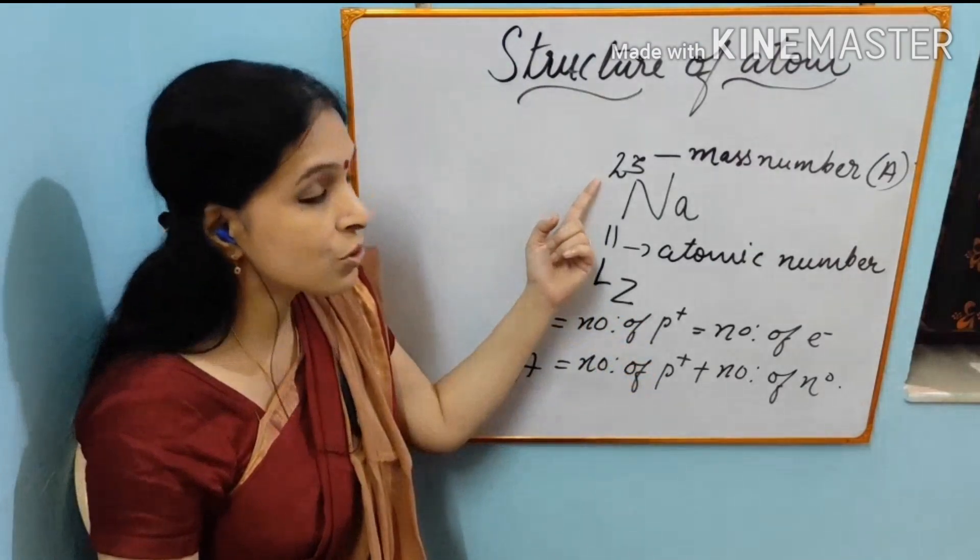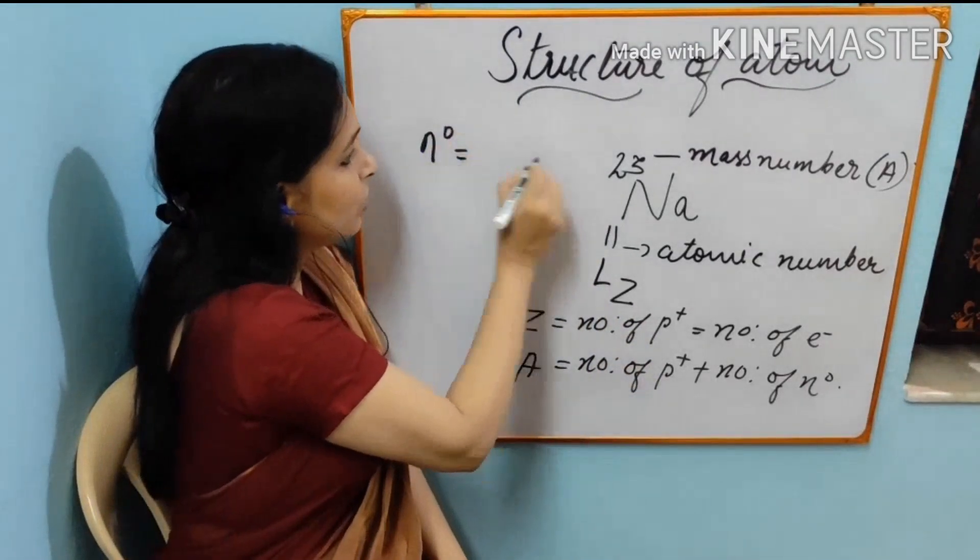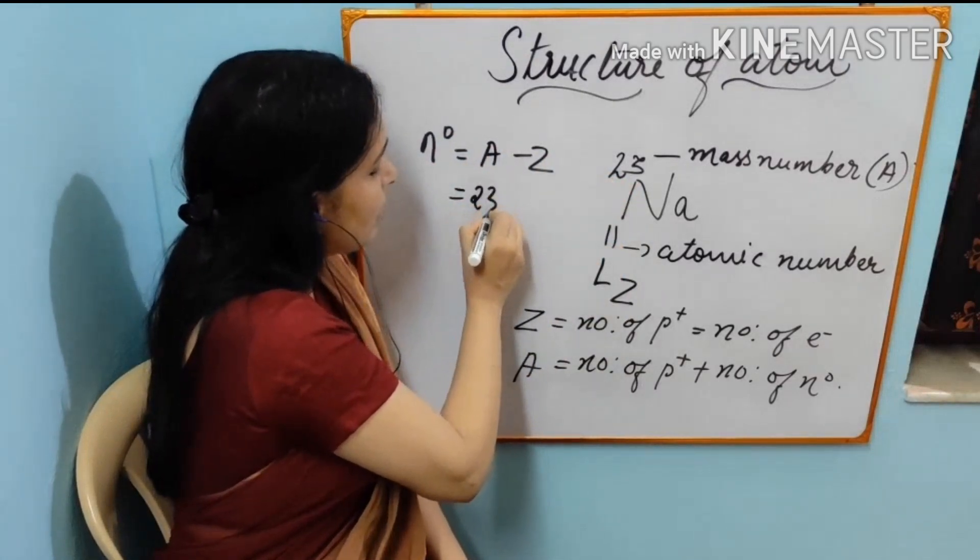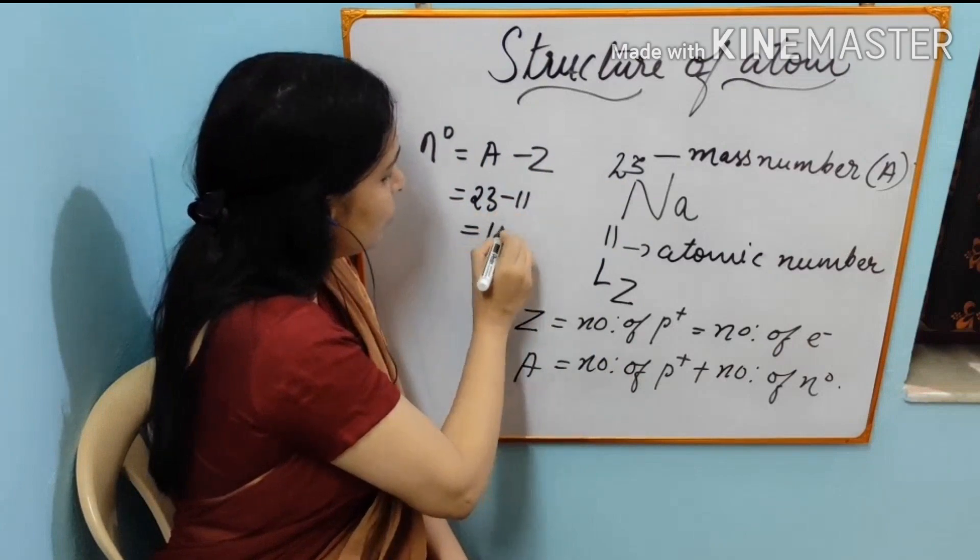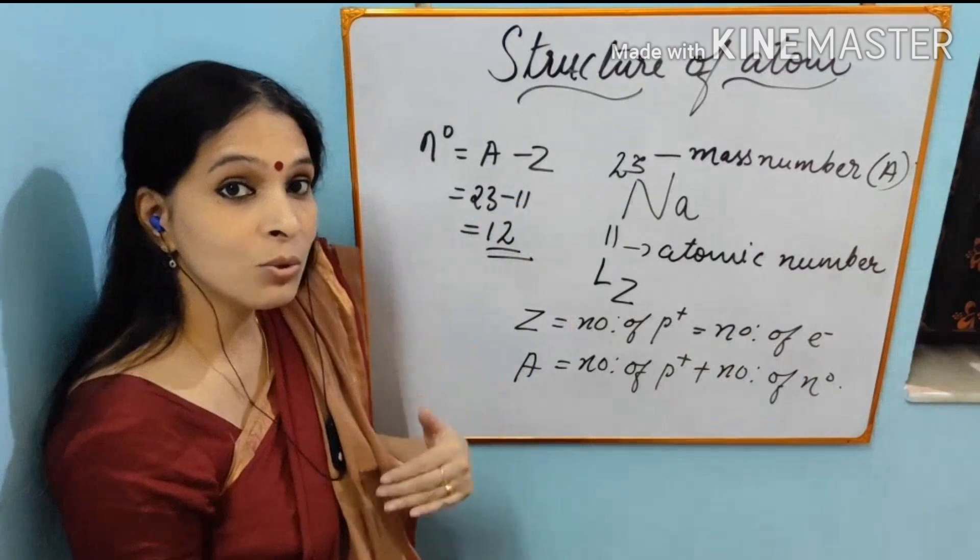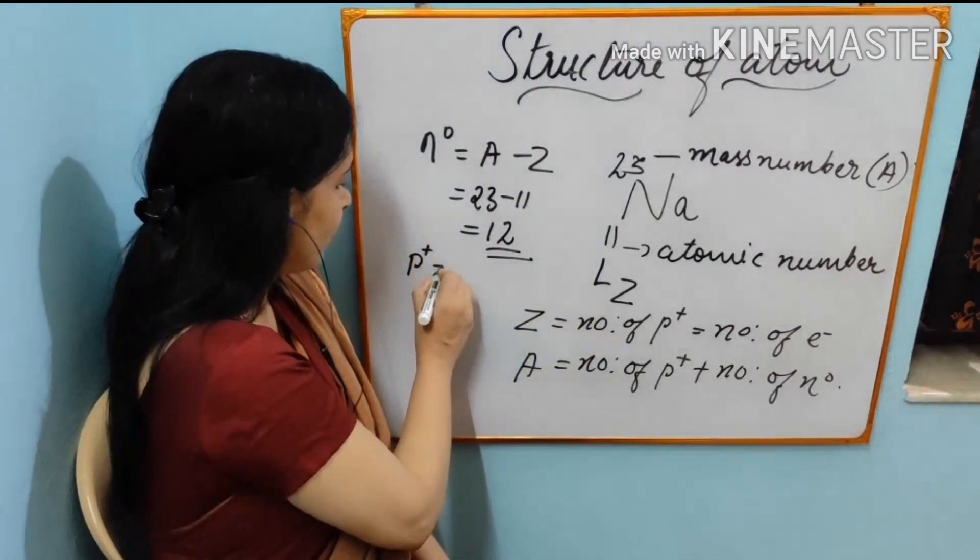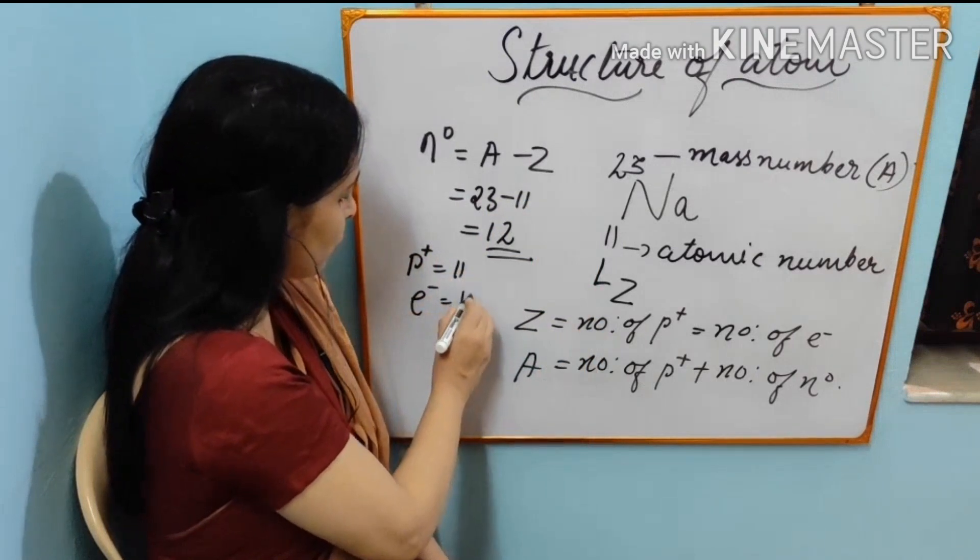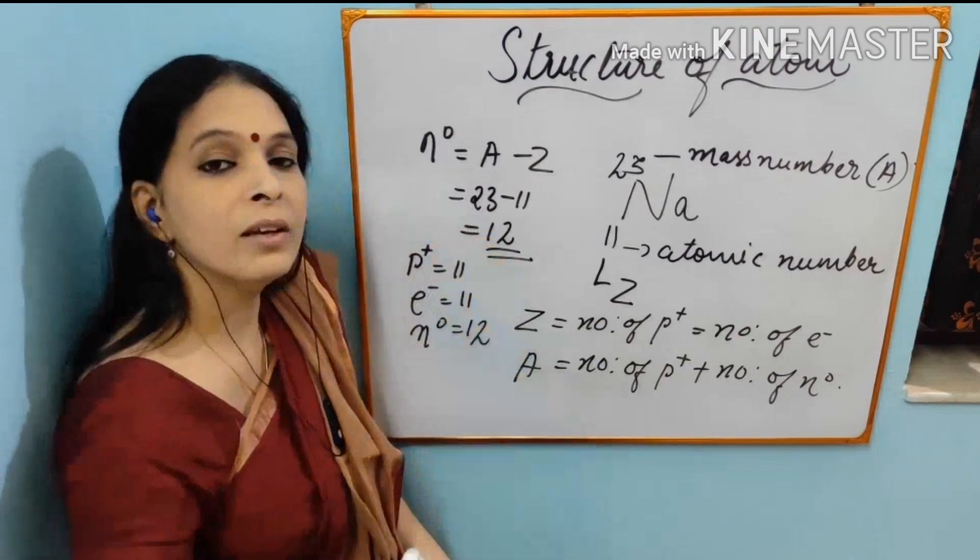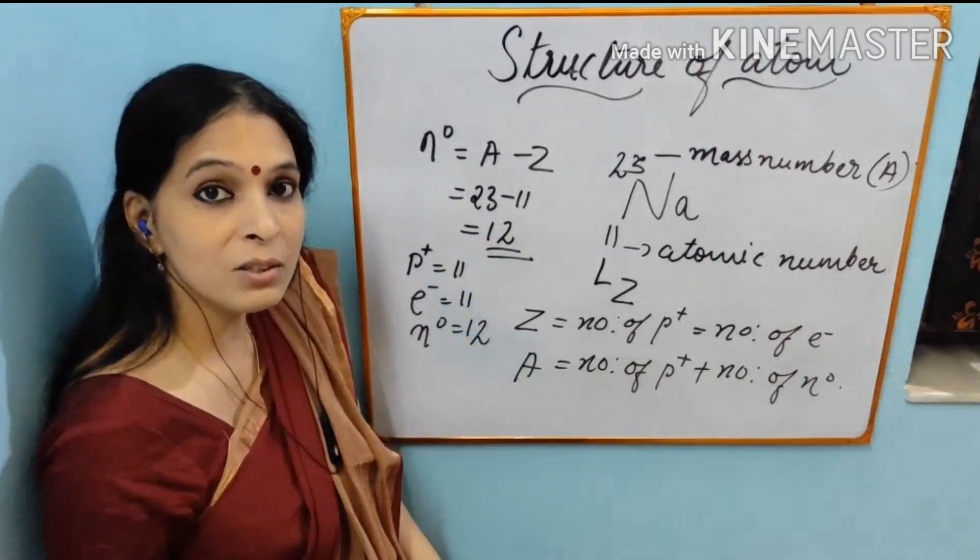And how can you find out neutron? We can find out the number of neutron equal to a minus z is equal to 23 minus 11 equal to 12. So we can understand here in sodium number of proton equal to 11, number of electron equal to 11 and number of neutron equal to 12. These are the subatomic particles present inside the sodium atom.